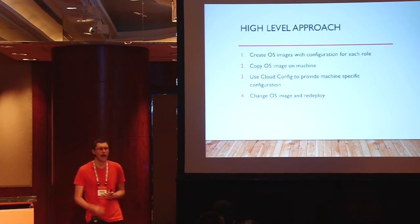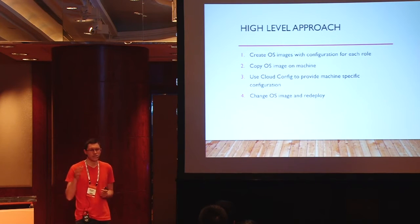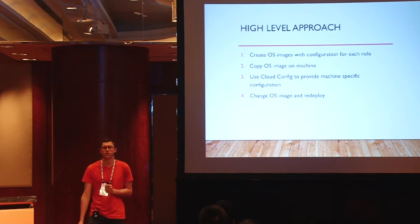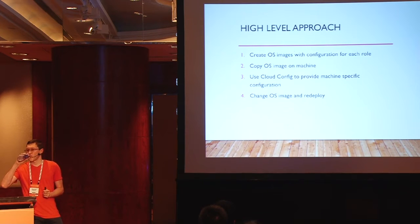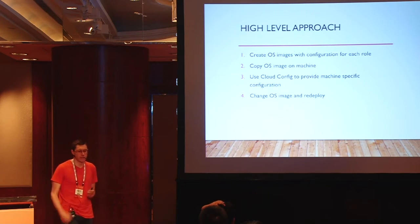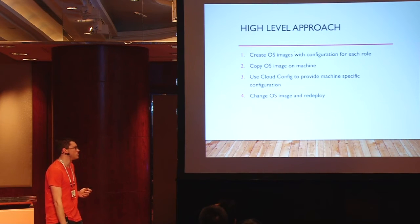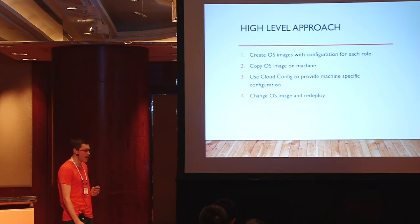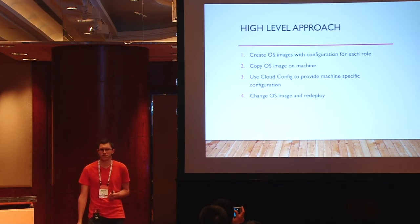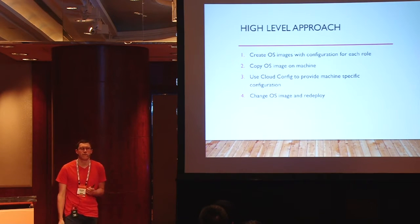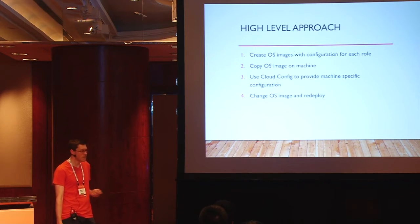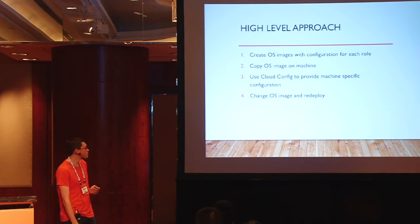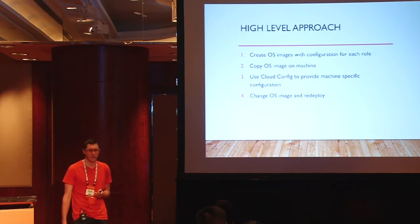So what did we plan on doing? We want to create role-specific images and bake as much of the configuration into that image as possible — what versions of packages we're installing, even tuning parameters baked into that image. We deploy that image to each machine based on the role it has. Where we have to specify machine-specific configuration such as IP addresses or what cluster it should join, we use cloud-config to provide that information. If we need to make a change, we go back to source control, make the change, test it, and redeploy.